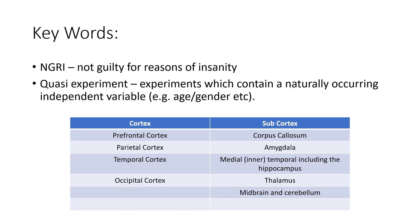There are a number of key words you need to remember for this study. NGRI means a person who is not guilty for reasons of insanity. In this study there is a group of murderers who basically pleaded not guilty because they had reasons of insanity, and from now on they're going to be referred to as NGRIs.